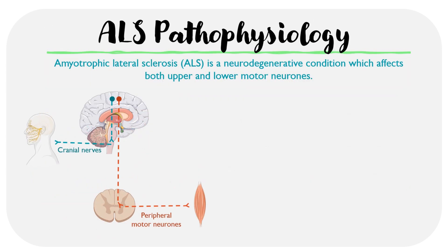Now that we understand both upper and lower motor neuron lesions, we can take a look at ALS, which can be defined as a neurodegenerative condition that affects both the upper motor neurons — so the corticobulbar and corticospinal tracts — as well as the lower motor neurons — so the cranial nerves and the peripheral motor neurons. This results in a mixed range of upper and lower motor neuron symptoms.